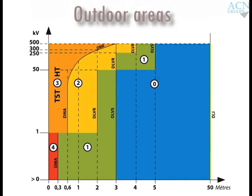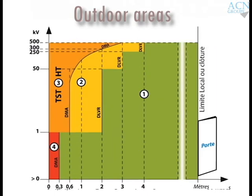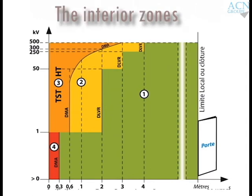Investigation Limit Distance (DLI): In outdoor zones, the conventional distance is 50 meters from bare energized conductive components, marking the beginning of Zone 0.